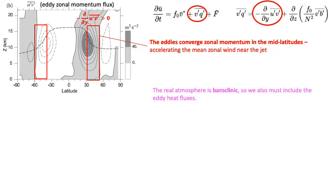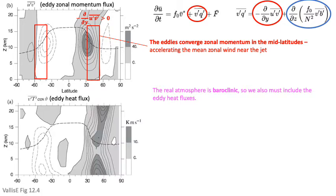Now let's move on to the baroclinic fluid, where we include the buoyancy effect — this gets more complicated. The real atmosphere is baroclinic, so you also have to include the eddy heat fluxes. What we're talking about here is the second term in the PV flux equation — the vertical derivative of the buoyancy fluxes modified by f-naught over N-squared. The bottom left plot now shows the eddy poleward heat flux, V-prime T-prime bar multiplied by the cosine of latitude.